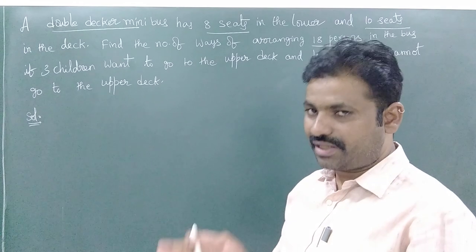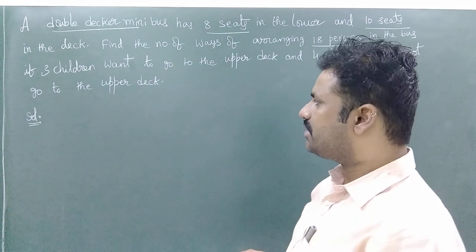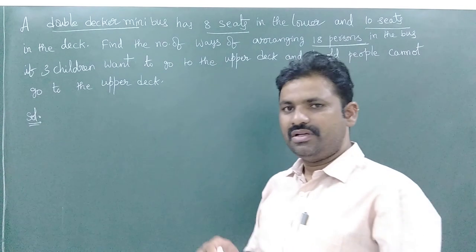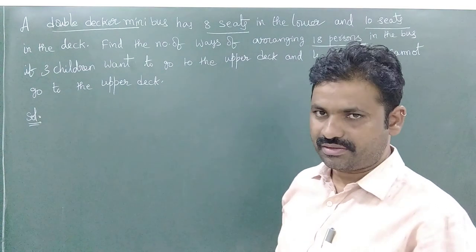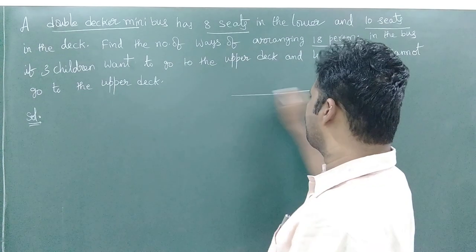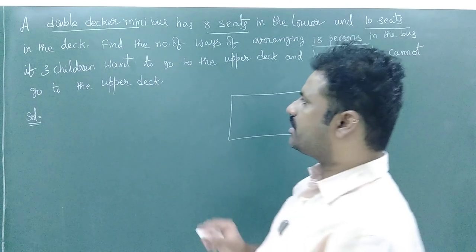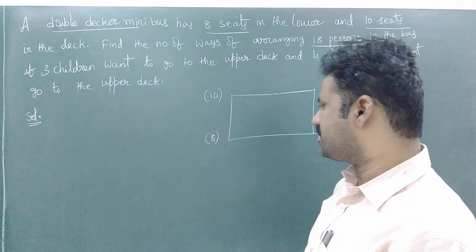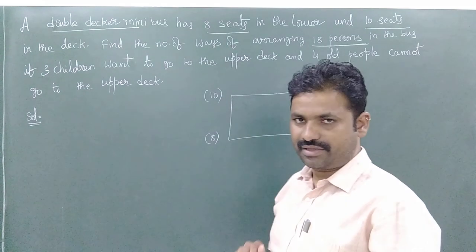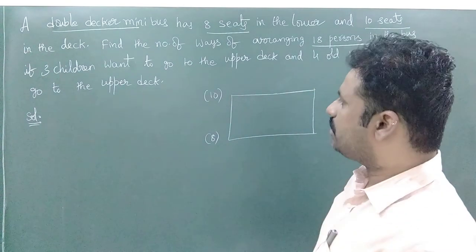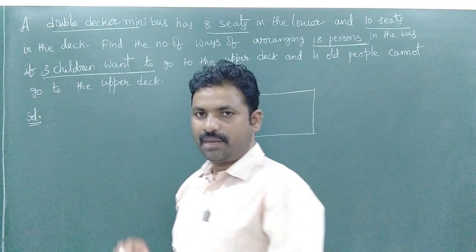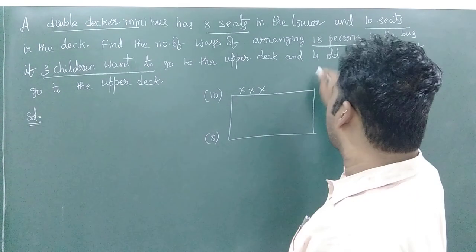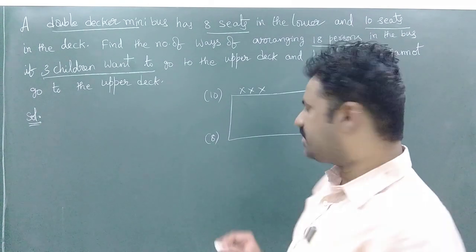18 seats are there and we are arranging 18 persons. The conditions given are: 3 children want to go to the upper deck, and 4 old people cannot go to the upper deck — meaning the 4 old people must sit in the lower deck. Upper deck capacity is 10 seats, lower deck capacity is 8 seats. Now, 3 children need to sit in the upper deck, and 4 old people cannot go to the upper deck, so they sit in the lower deck.